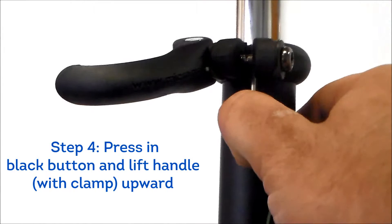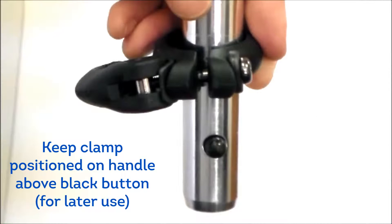Press in black button and remove handlebar with clamp. Keep clamp positioned on handle above black button for later use.